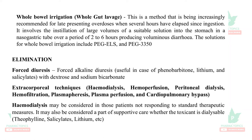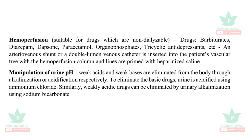Hemodialysis is considered in patients not responding to standard therapeutic measures, when the toxicant is dialyzable. Hemoperfusion is suitable for non-dialyzable drugs such as barbiturates, dapsone, and paracetamol. An arteriovenous shunt or double-lumen venous catheter is inserted into the patient's vascular tree with a hemoperfusion column. Manipulation of urine pH: acidic drugs with weak bases, weak bases with weak acids — urinary alkalinization or urinary acidification.